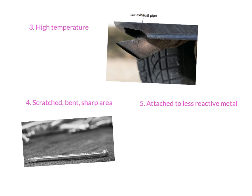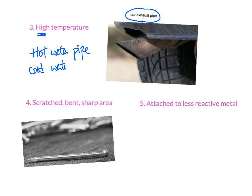The third factor is high temperature. As with most reactions, providing a higher temperature speeds up the reaction. For example, a car exhaust pipe gets very hot and rusts faster. Similarly, a hot water pipe will rust faster than a cold water pipe. The fourth factor involves scratched, bent, or sharp areas.